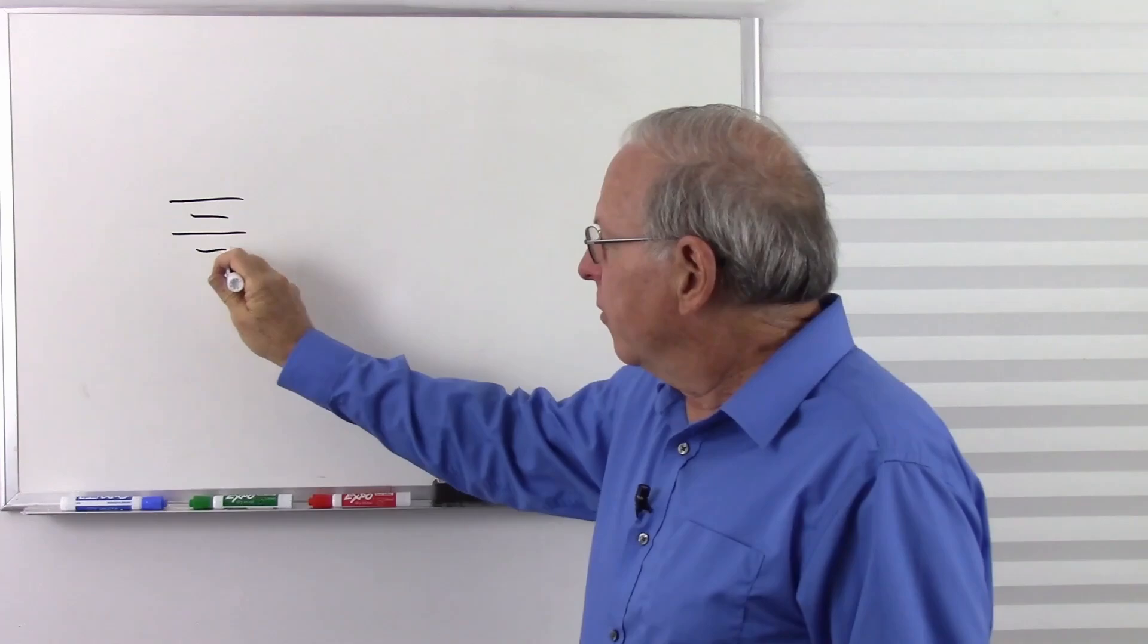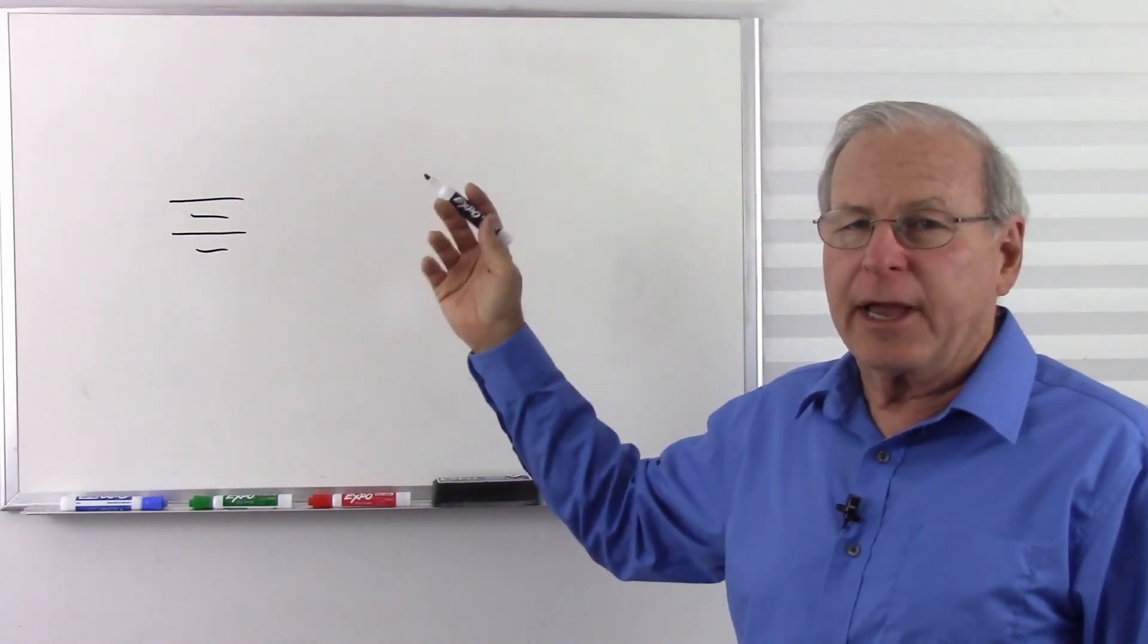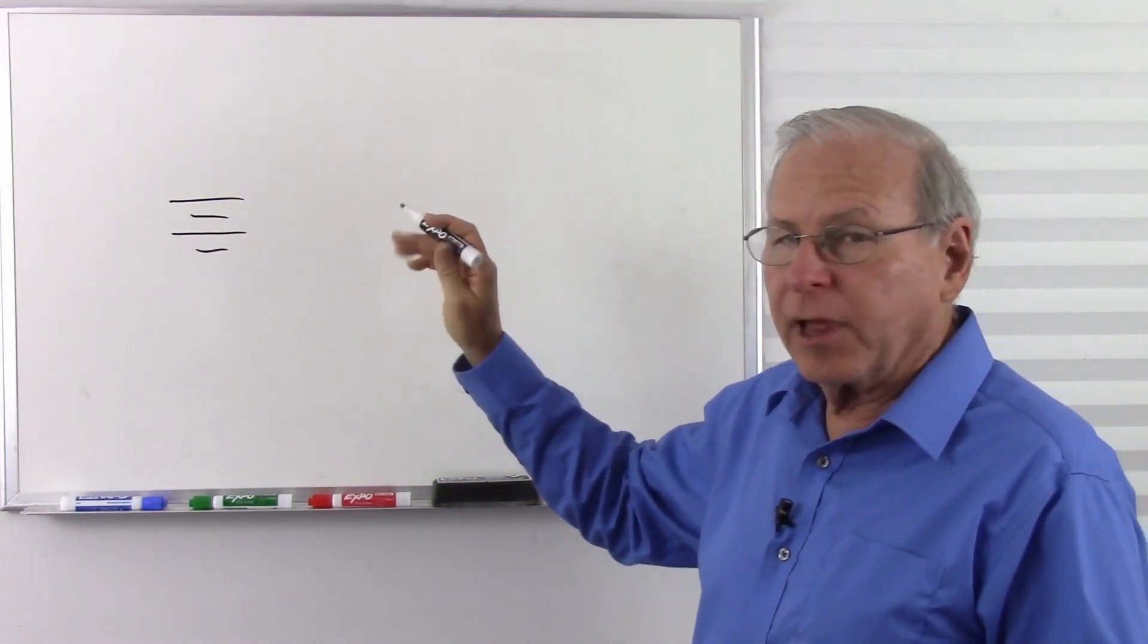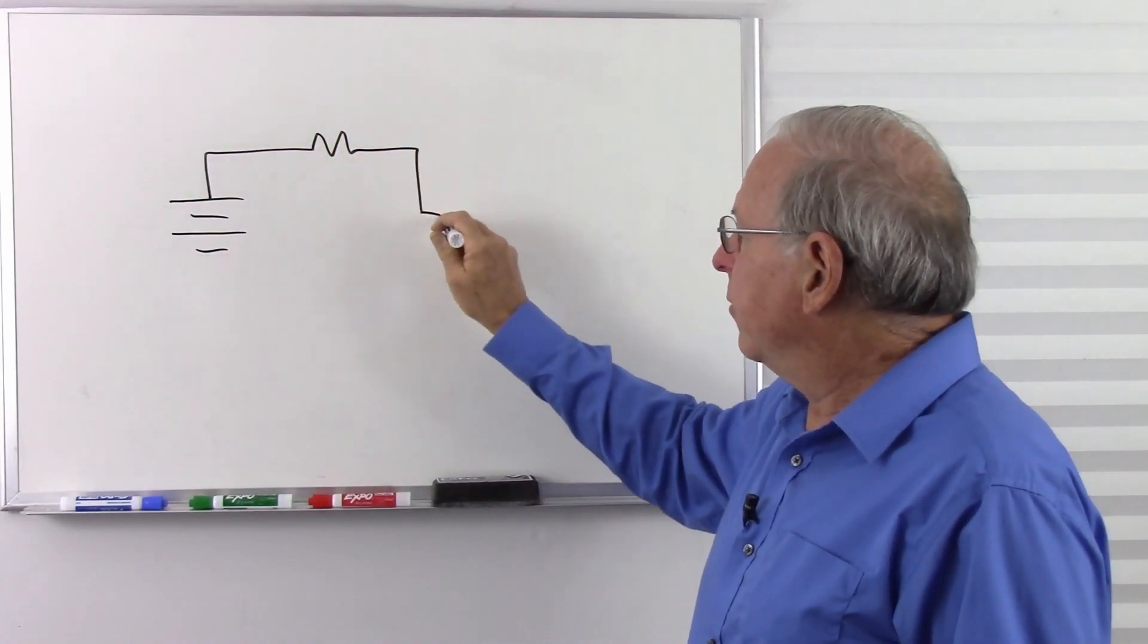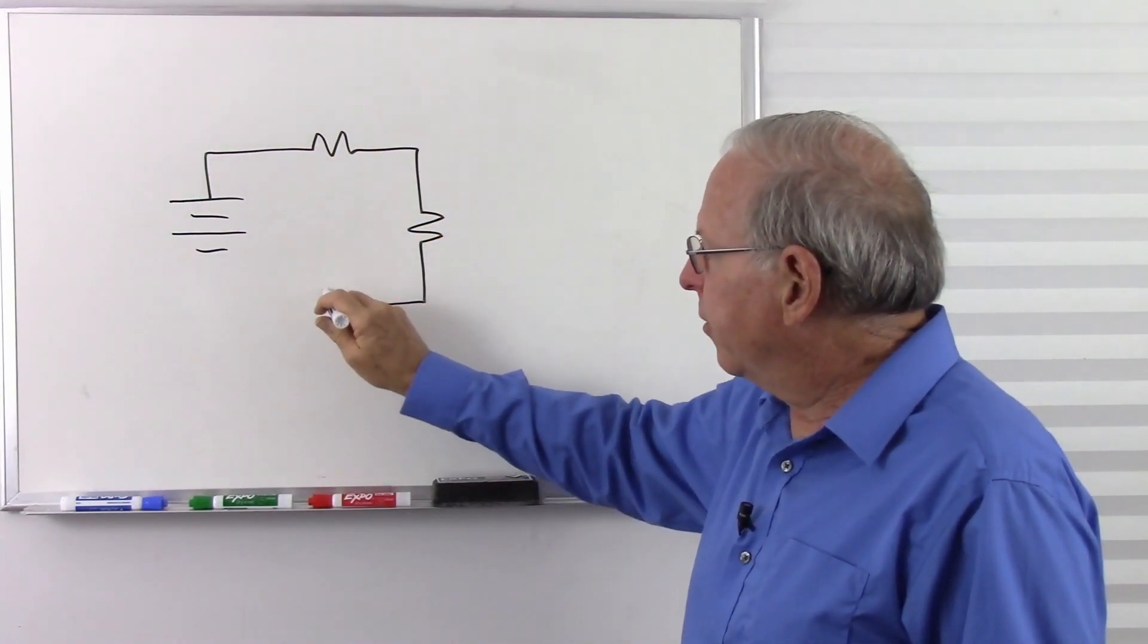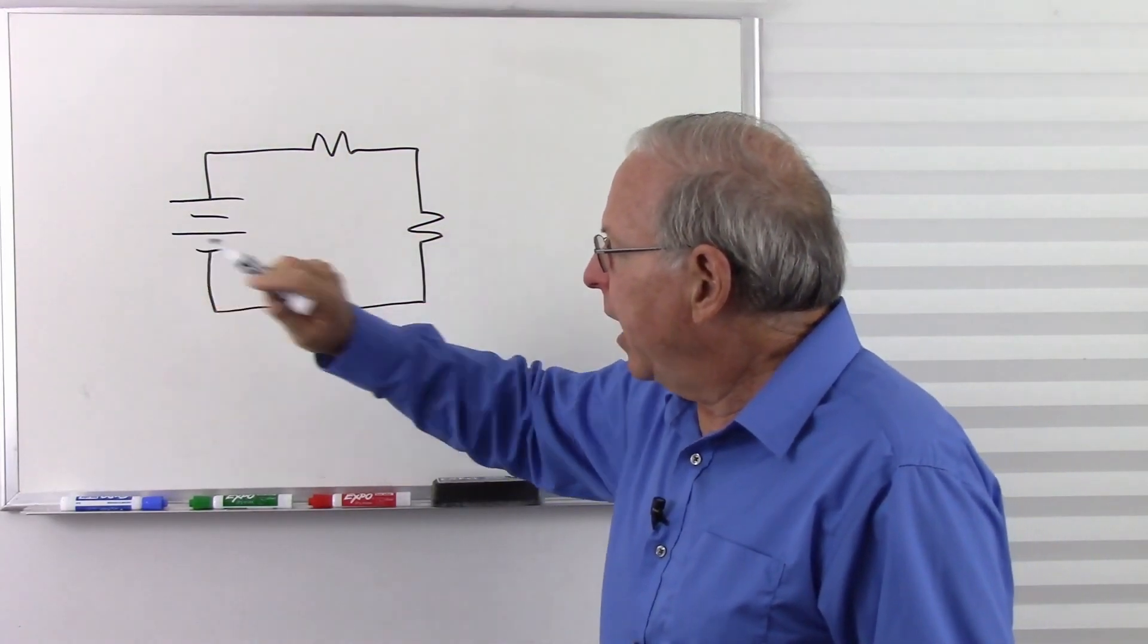Here is a battery or other voltage source. This could be a power supply, a battery, whatever is supplying some voltage. And let's just put some resistors around it and see how the voltage and polarity behave in this circuit.